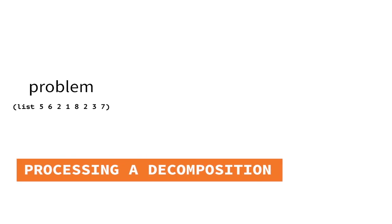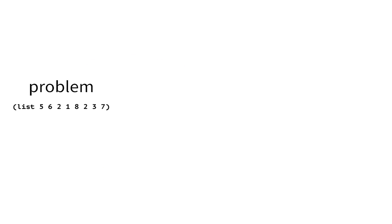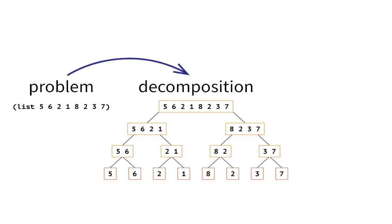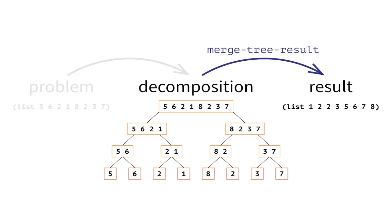Our plan for sorting the list has two stages. First, we take a large sorting problem and decompose it into smaller and smaller problems. Second, we take the small sorting results and combine them into larger and larger results. Let's design the second stage first.